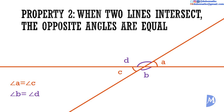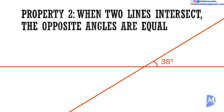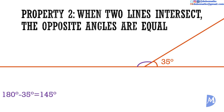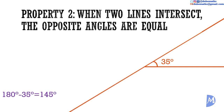This property builds on the first. Consider these two lines that intersect. We are given that this angle is equal to 35 degrees. From what we learned in the first property, if we ignore the bottom part of this line, we can calculate the size of this angle. We know that both angles add to 180 degrees. 180 degrees minus 35 degrees is equal to 145 degrees. So this angle is equal to 145 degrees. By the same logic, this angle is equal to 145 degrees also.